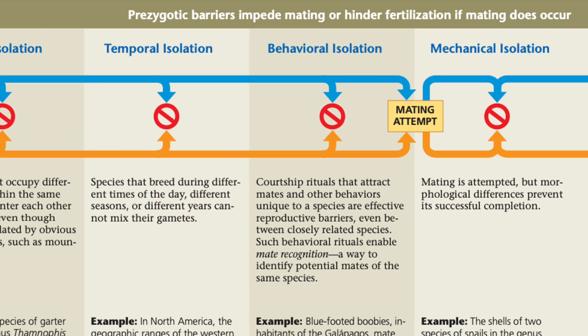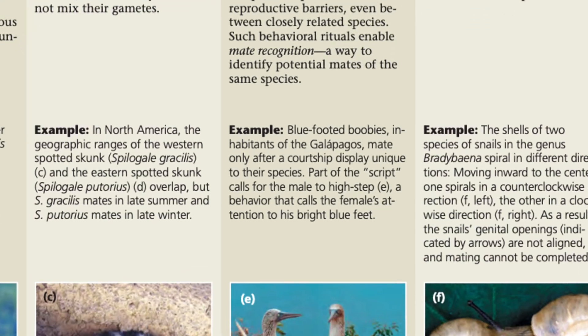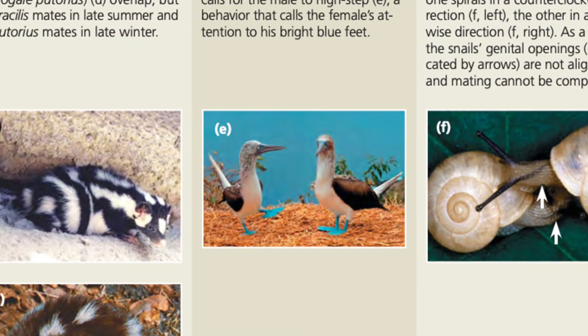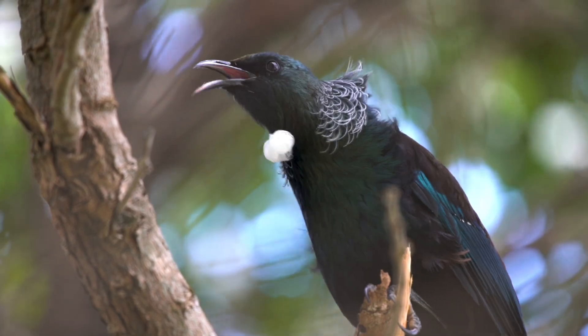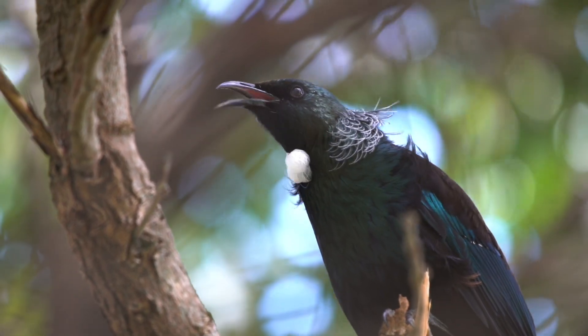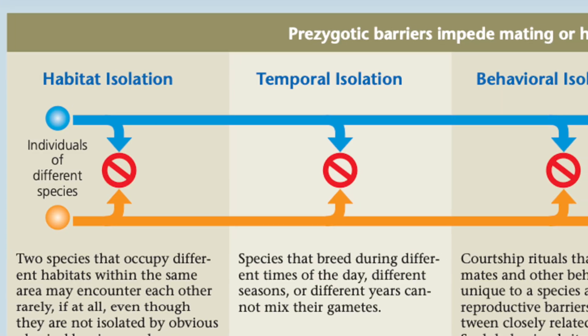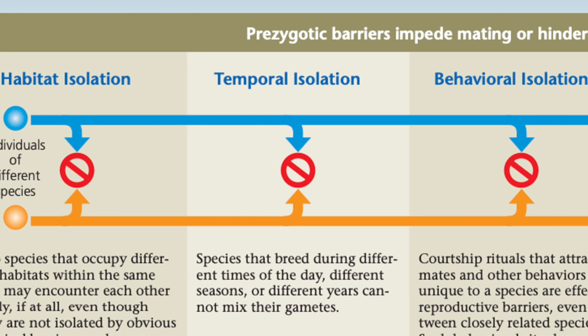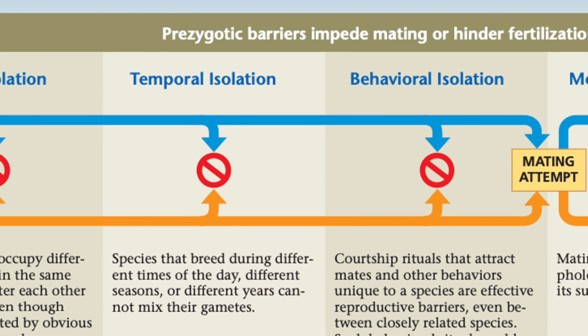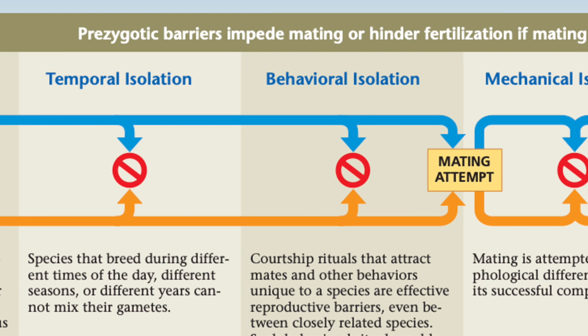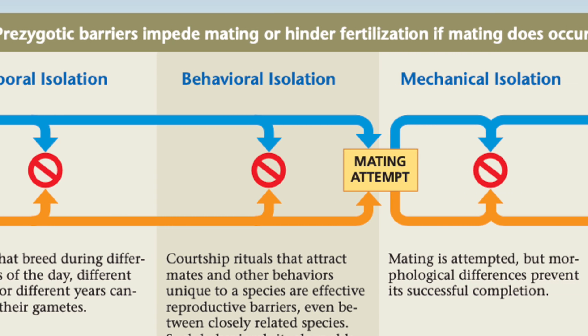Another prezygotic barrier is behavioral isolation. Here we focus on things like mating calls, dances, or other mating rituals performed by organisms. Between two non-interbreeding species, chances are good that they wouldn't recognize the suggestive mating behavior of a completely different species. This is very common with things like bird songs and pheromone reception. But let's say that all those things were actually overcome — two species live in the same area, they mate at the same time, and maybe they even have similar behaviors to entice each other into a mating attempt.